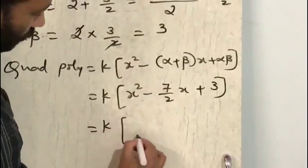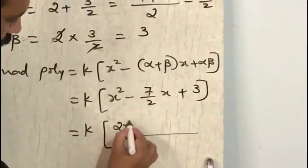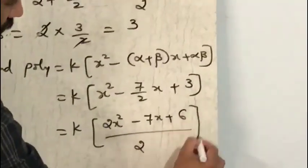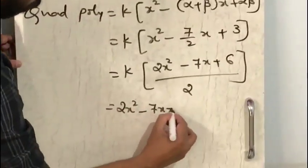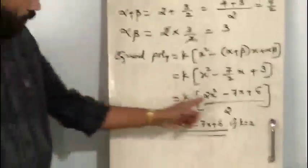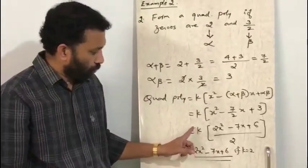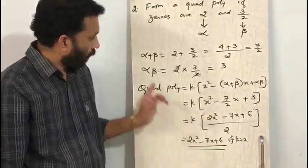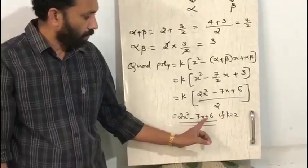Taking the LCM, which is 2, the polynomial becomes 2x squared minus 7x plus 6, when k is equal to 2. That means when the denominator is 2 we take k as 2, so the 2s cancel out and the polynomial is 2x squared minus 7x plus 6.